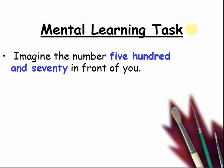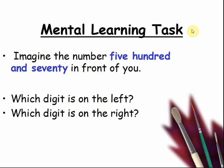Imagine the number 570 in front of you. Which digit is on the left? That's right, it would be a 5. Which digit is on the right? That's right, it would be a 0. Which digit is in the middle? That would be the 7 from 70.